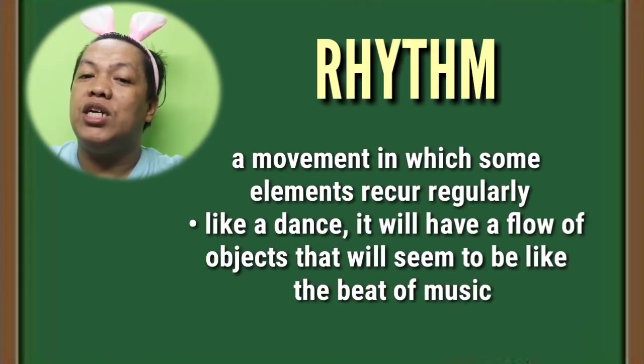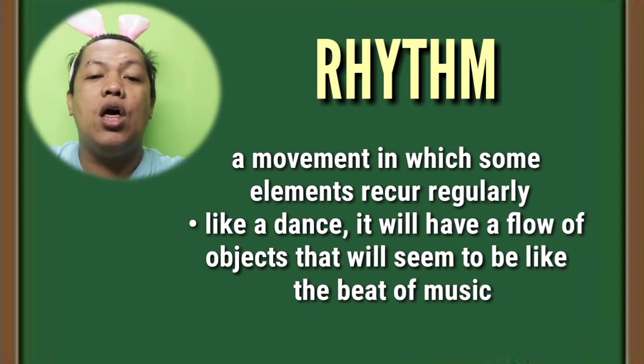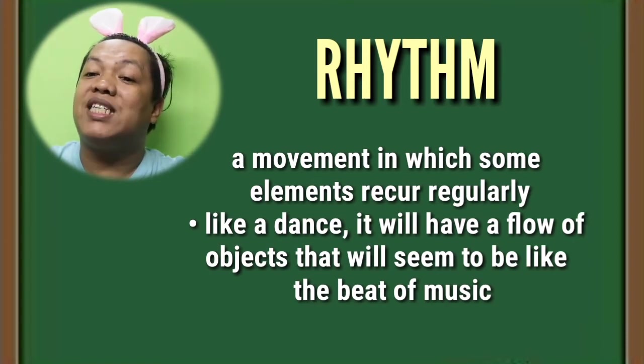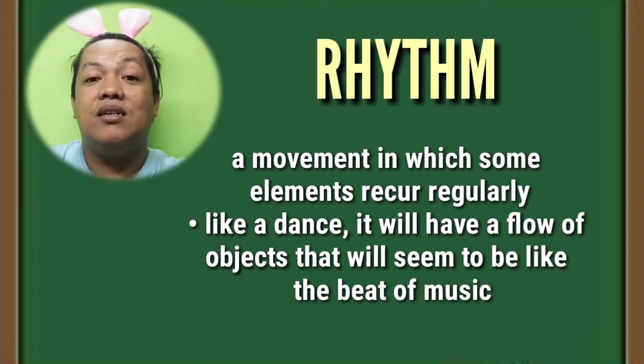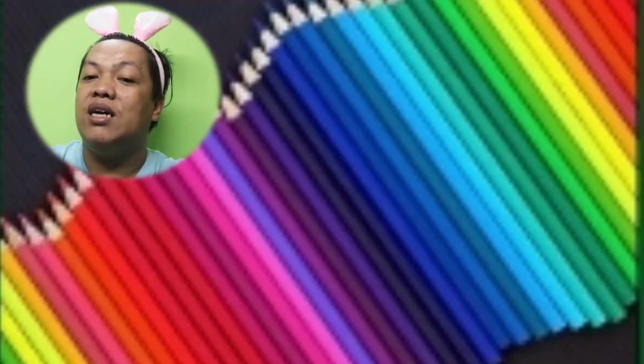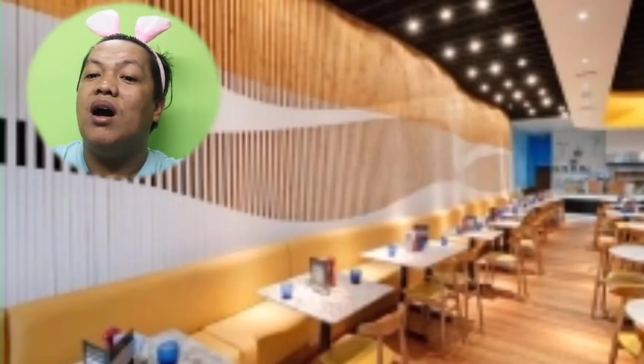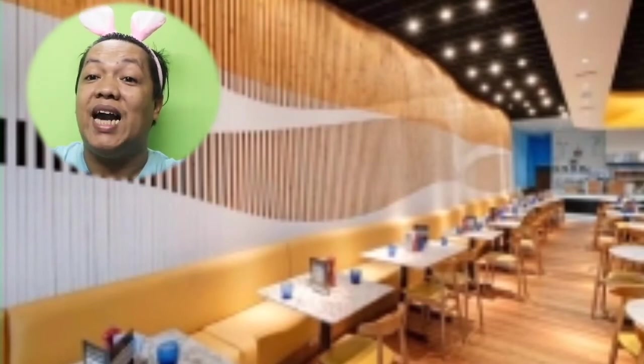The seventh visual design element refers to rhythm — a movement in which some elements recur regularly, like a dance. It will have a flow of objects that seem like the beat of music. Perfect examples projected on your screens include a rhythm of colored pencils and the rhythm in the interior design of a restaurant.